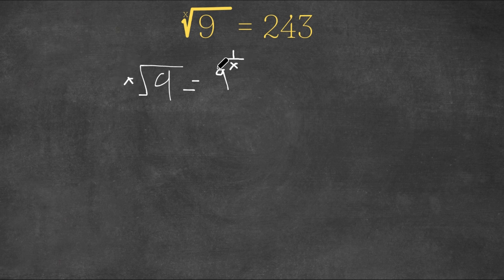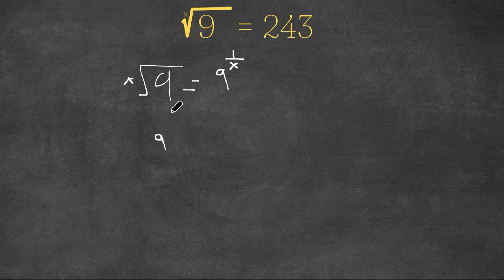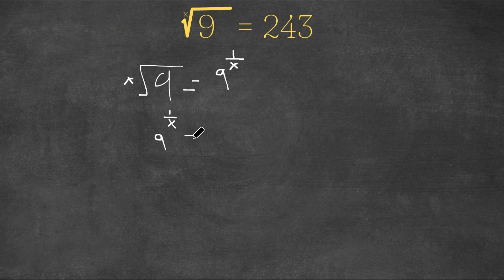So now that we have an alternate form of this, let's write down our equation. We have 9 to the power of 1 over x equals 243.